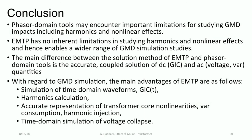In conclusion, phasor domain tools may encounter important limitations for studying GMD, especially regarding the impact of harmonics and nonlinear effects. In EMTP there are no inherent limitations — we can calculate harmonics accurately and model nonlinear effects. The main difference between EMTP and phasor domain is the accurate coupled solution of DC and AC quantities. The main advantages of EMTP are: time domain waveform simulation, harmonics calculation, accurate representation of iron core nonlinearities, VAR consumption modeling, and time domain simulation of voltage collapse.